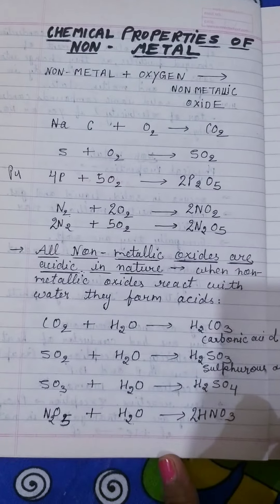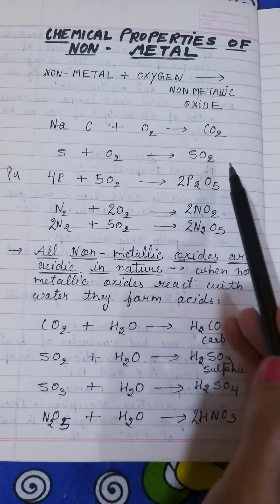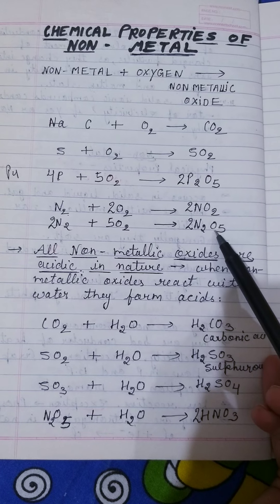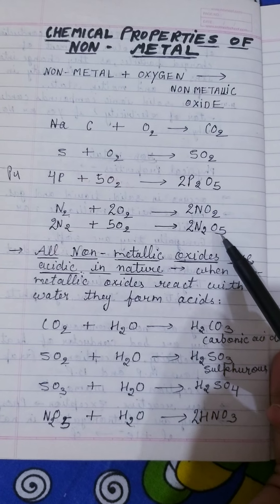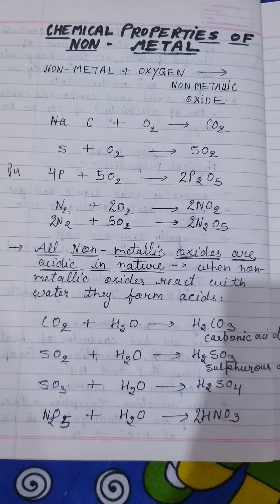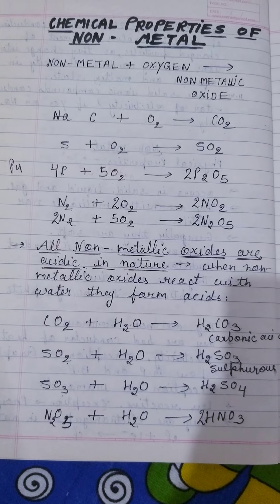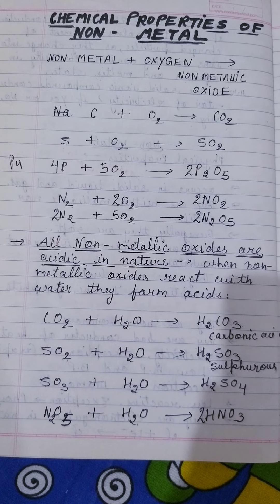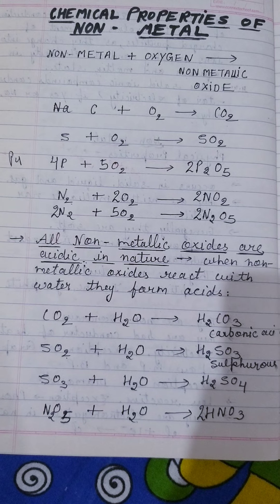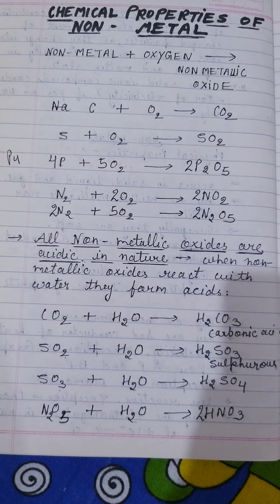Now we need to understand all the non-metallic oxides formed here. The key statement is: when non-metallic oxides react with water they form acids, which shows that non-metallic oxides are acidic in nature.